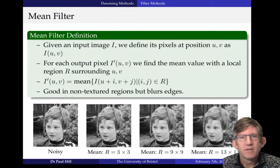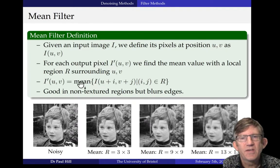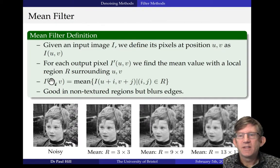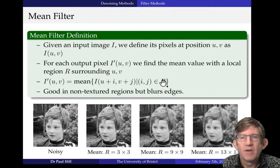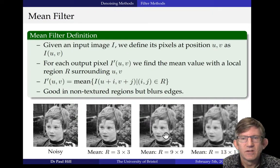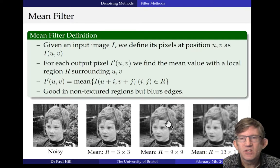Let's have a look at some methods. The simplest method you can think of is the mean filter. If we look at the definition of the mean filter in terms of this equation, each pixel of the output is the mean of a small region R of the input. If we have a region of three by three, we get an averaging or low-pass filter. If we increase R to nine by nine, or 13 by 13, we get progressive blurring. For regions that are plain — i.e. very little texture, such as his cheek — it works quite well and gets rid of the noise. But it's just blurred everything and got rid of the definition of the edges.